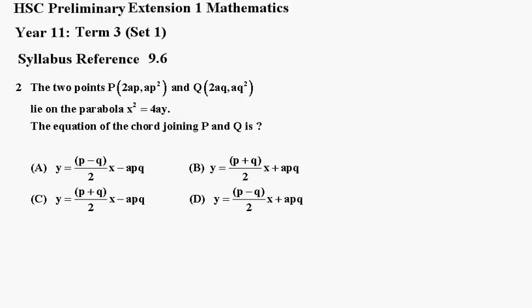Number 2. The two points P(2ap, ap²) and Q(2aq, aq²) lie on the parabola x² = 4ay. The equation of the chord joining P and Q is A, B, C, or D?